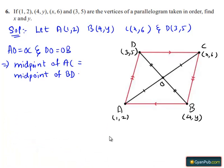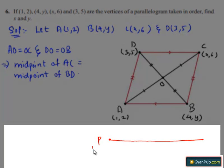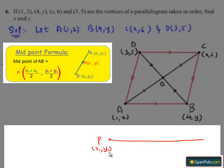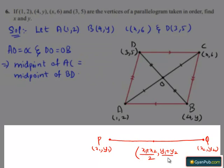We know that the midpoint of the line segment joining the two points P and Q is given by (x1 + x2)/2, (y1 + y2)/2.